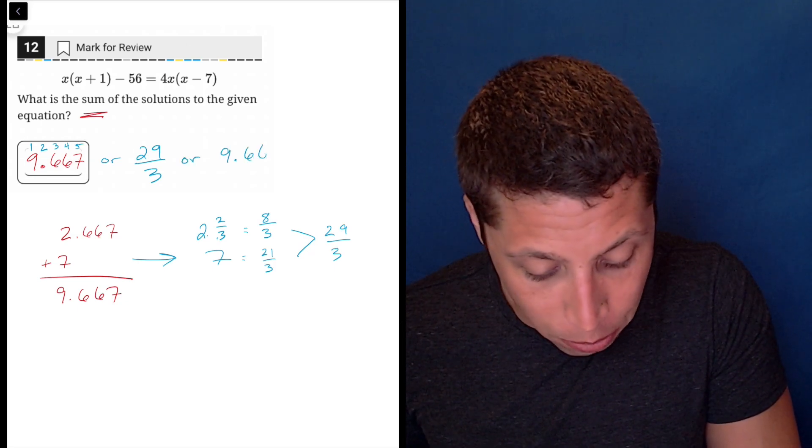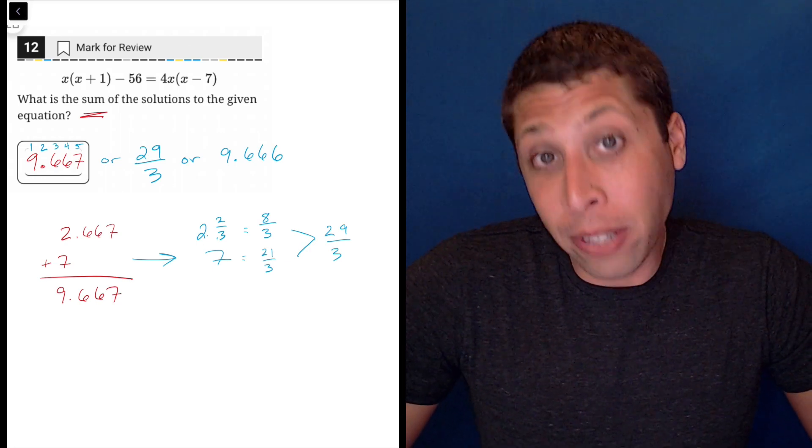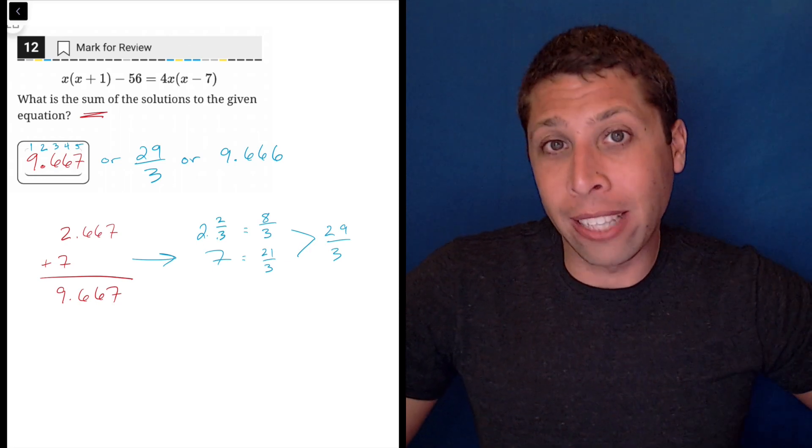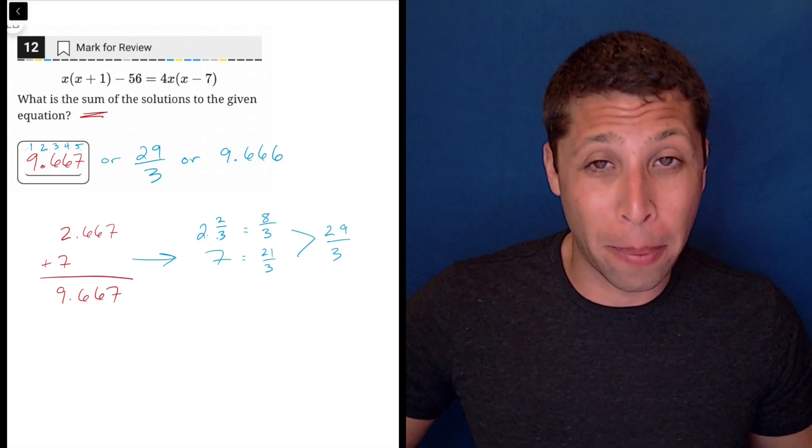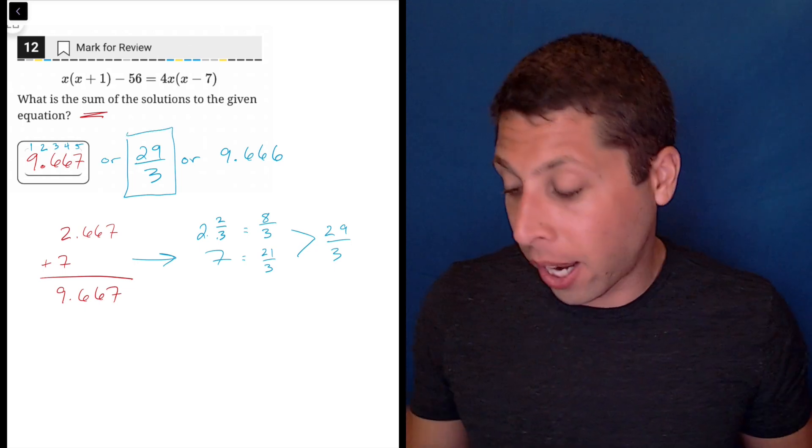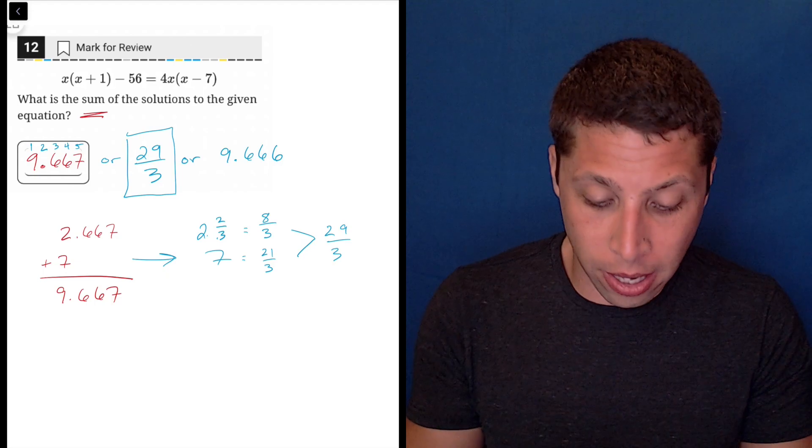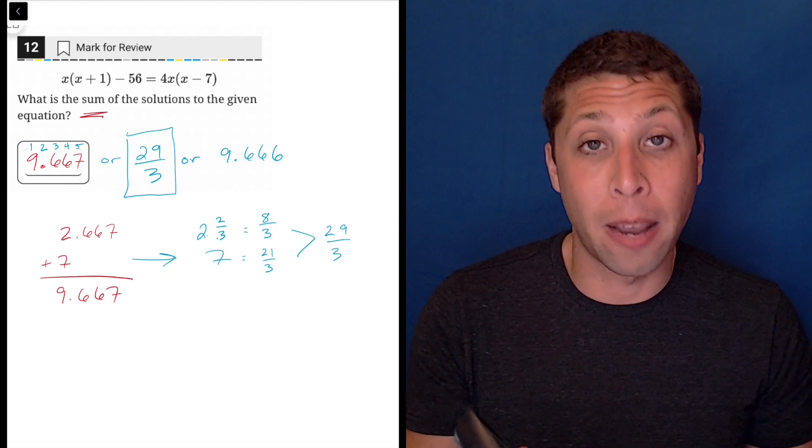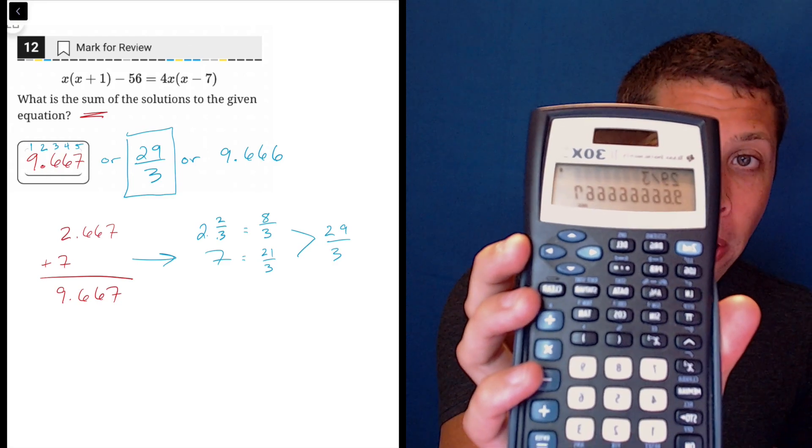You could also enter 9.666, because you don't have to round it, you can just, what's called truncating it, just drop the remaining digits, because the six goes on forever, so you could just drop it here. But this is why this is so confusing to me. My preference would be for 29 thirds, and just to confirm that I did all that fraction work right, 29 divided by three is 9.667, maybe you can see it. So there you go.